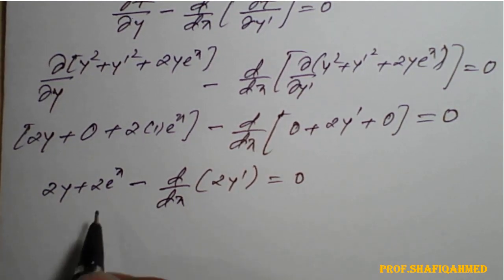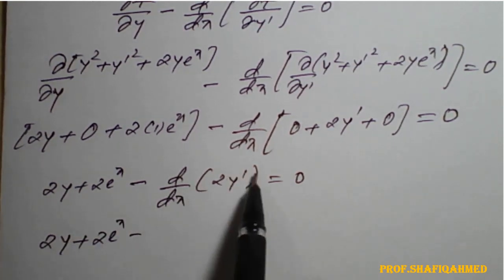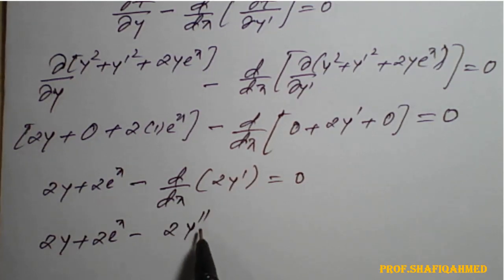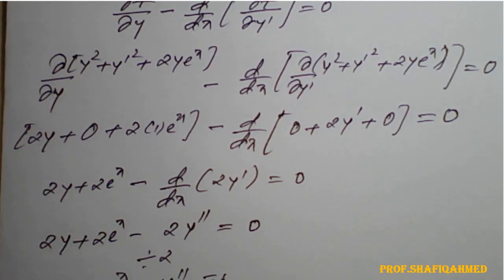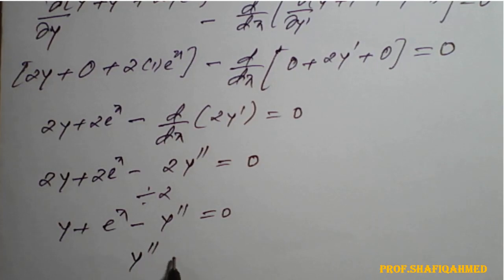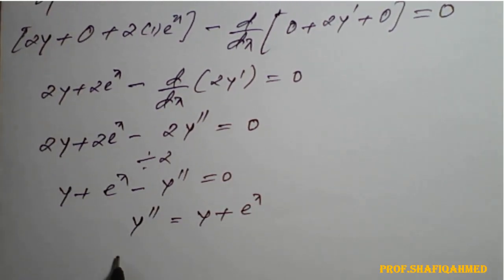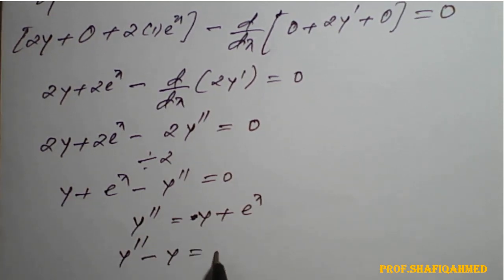Now d/dx of 2y-dash becomes 2y double-dash. So we have 2y plus 2eˣ minus 2y'' equals 0. Dividing both sides by 2: y plus eˣ minus y'' equals 0. Rearranging, y'' minus y equals eˣ.